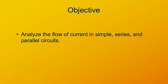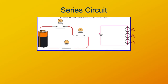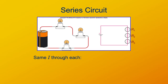What I'd like you to be able to do is analyze the flow of current in simple series and parallel circuits, and we'll talk about what happens with a series-parallel combination. First, this is what a series circuit is: three light bulbs in the same circuit, where the current has to go through one bulb, then the next, then the next — there are no branches. The circuit diagram shows resistor 1, resistor 2, and resistor 3 in series with the voltage source.